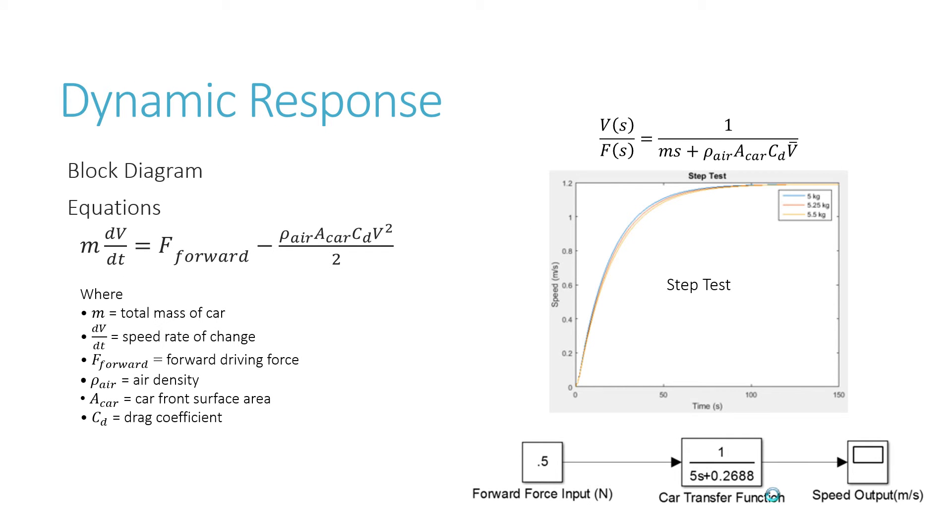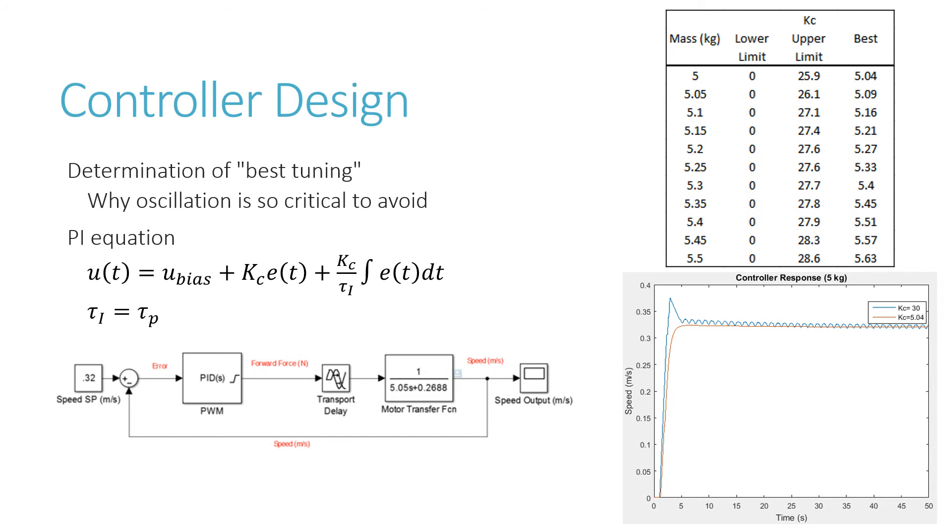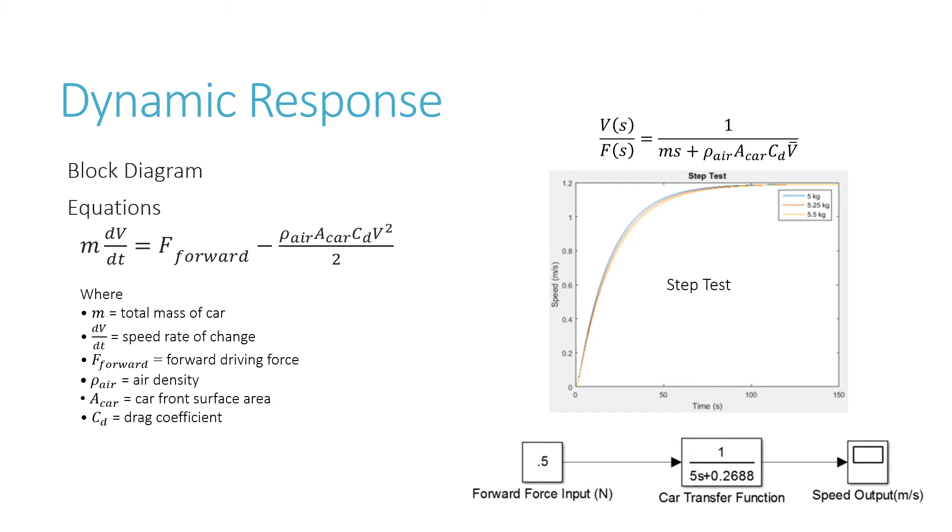Here's a slide that shows the dynamic response of our system. First, we have the momentum balance equation: m dv/dt = F_forward - ρ_air A_car C_d v². This is the momentum of the car changing with time. This is the forward driving force, and this is the air drag resistive force, which acts opposite to the driving force forward.